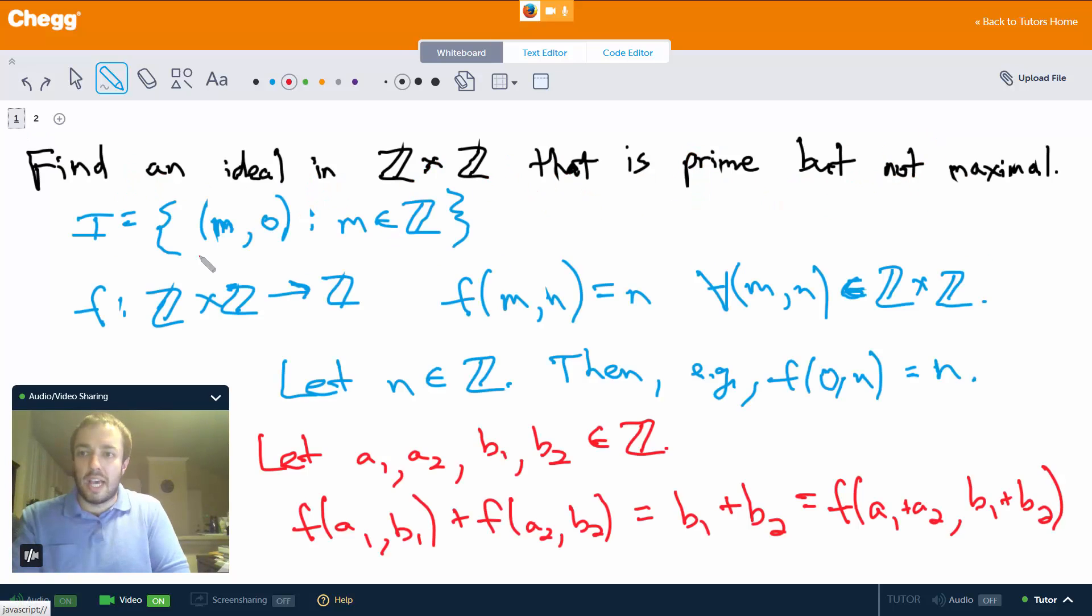And combining that with the fact that this equals this, and the fact that the function is surjective, we have a surjective homomorphism from Z×Z to Z.